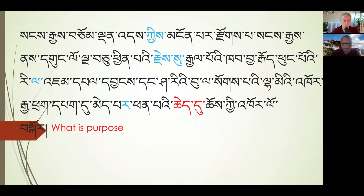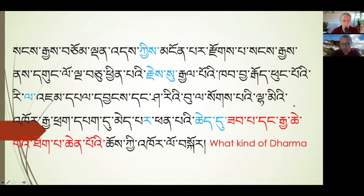Sometimes the Buddha keeps teaching with a purpose — why? The word 'phyir' or 'chido' means 'for the benefit of.' So we now have: the Dharma wheel turned by Buddha, at that time, at that place, to this audience, for this purpose. The text also describes what kind of Dharma it was — a verse and prose composition, a Mahayana teaching. So we're describing the kind of Dharma being taught.